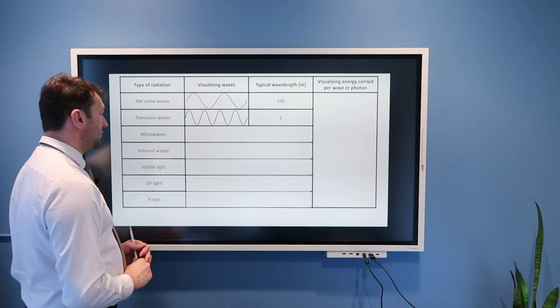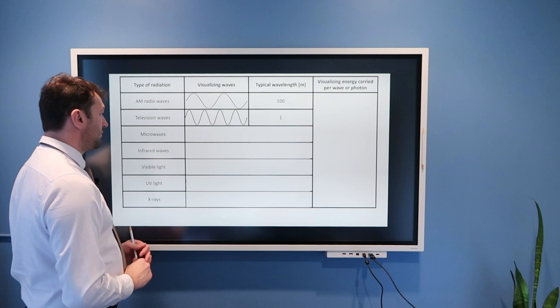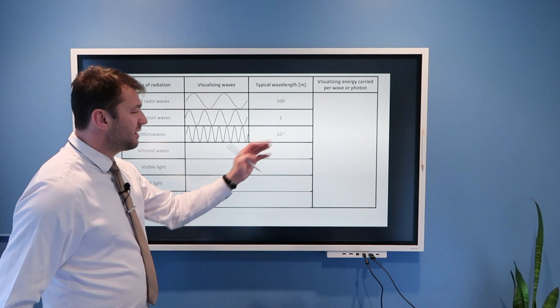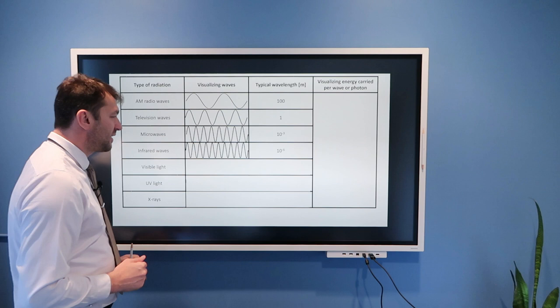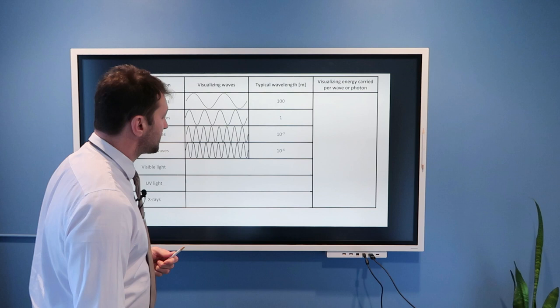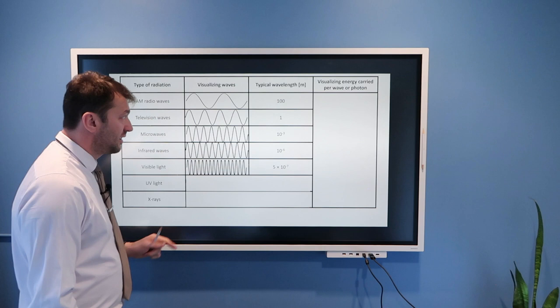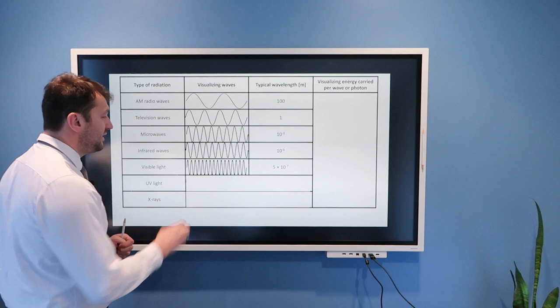and you can see they are shorter than AM radio waves. Then microwaves that you have in your microwave oven are about 1 millimeter, 10 to negative 3 meters, even shorter wavelength. Then visible light, characteristic wavelength is 5 times 10 to negative 7 meters, even shorter wavelength.